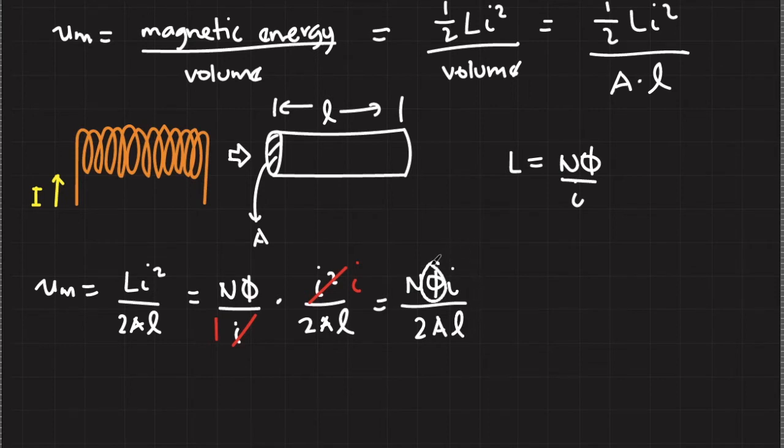Now phi here is the magnetic flux. And recall that the definition of magnetic flux is the dot product of magnetic field vectors to the area vector. Now in our system, we have this cross-sectional area, and the area vector is actually parallel with the magnetic field vectors inside the solenoid.